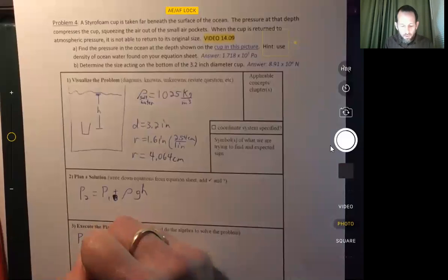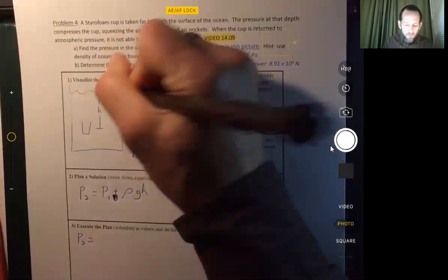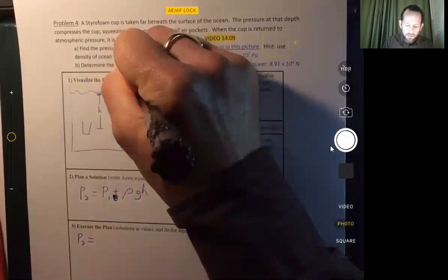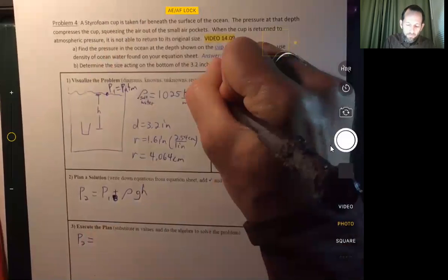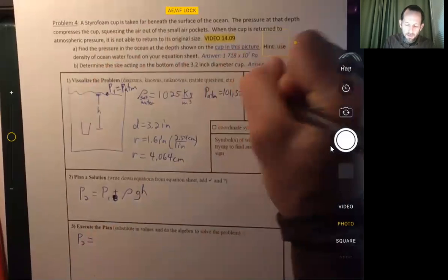And so we can use this equation to figure out the pressure at depth. So the pressure equals P1. That's the pressure up here. Well, P1 is equal to atmospheric pressure. And atmospheric pressure is 101,325 pascals.